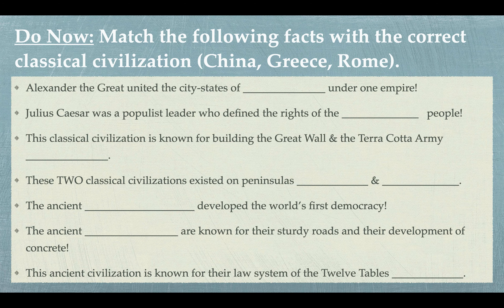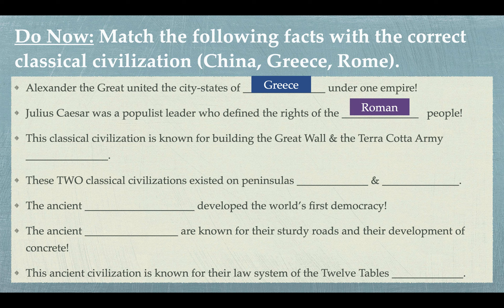Going back to the do now, I want to go through this with you together just to make sure you all got the correct answers. We know that Alexander the Great was a great Greek emperor — even though he was not from Greece, he was from Macedonia — but he did help unite the Greek city-states under one empire. Number two, Julius Caesar was a populist leader who defended the rights of the Roman people. Remember, Julius Caesar was one of the major key players in ancient Rome who promoted the rights and needs of the people. Number three, this classical civilization is known for building the Great Wall and the Terracotta Army. We know that the Great Wall exists in China and that the Qin dynasty was responsible for both of these accomplishments.